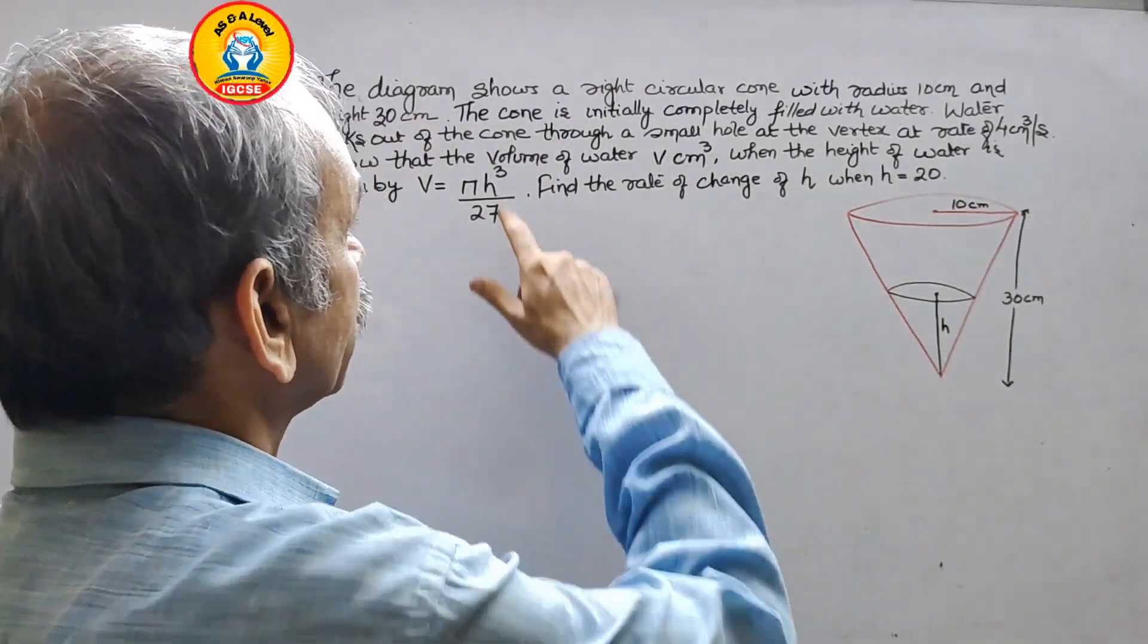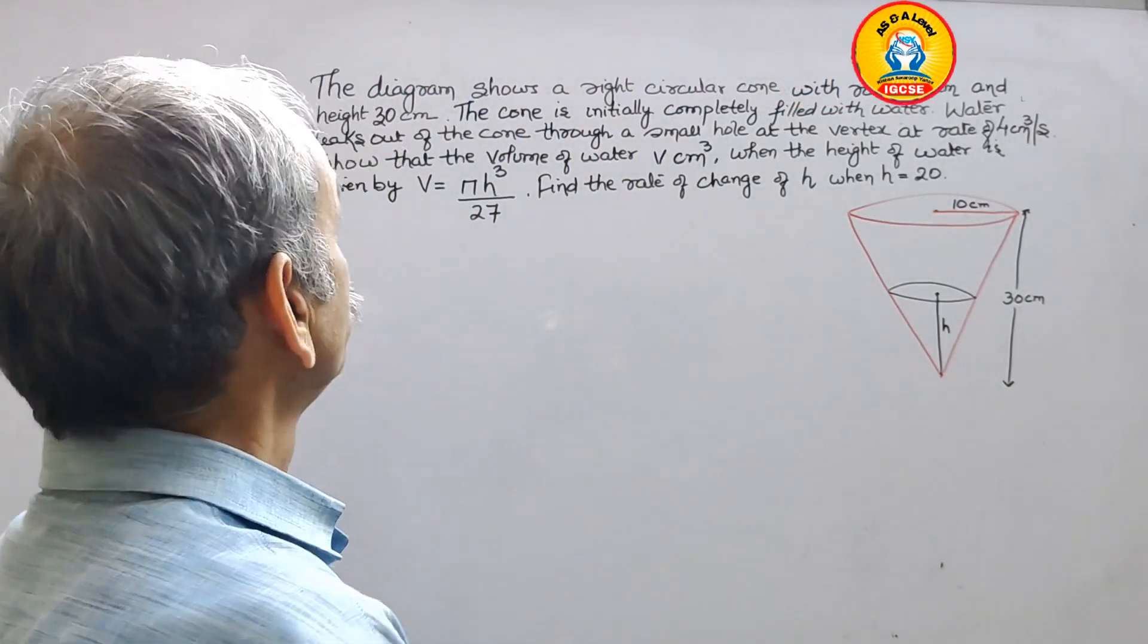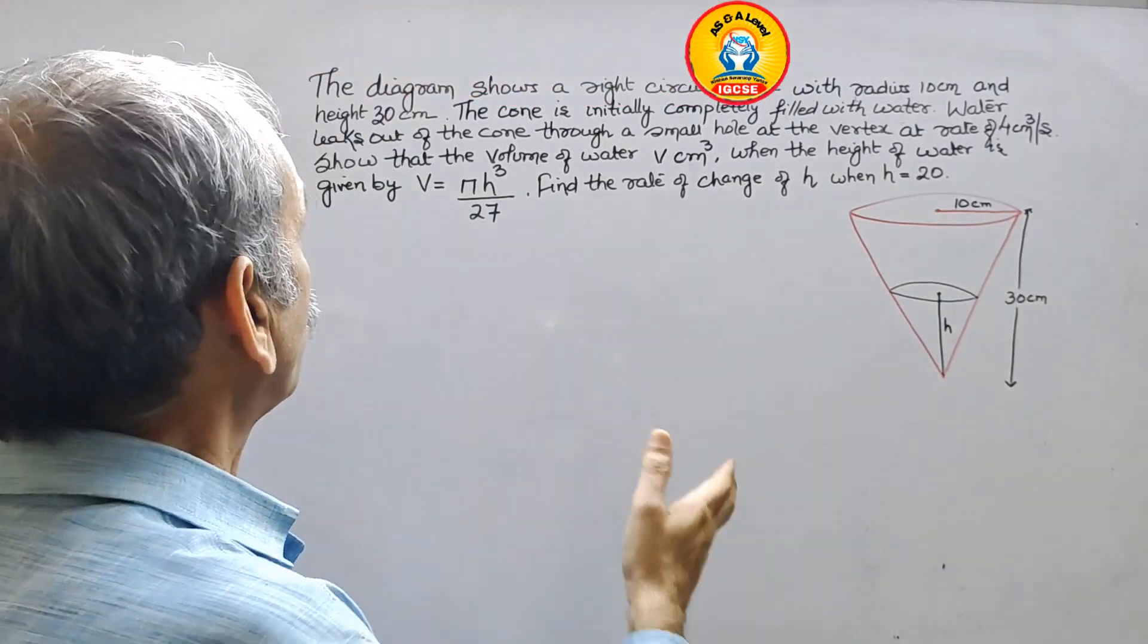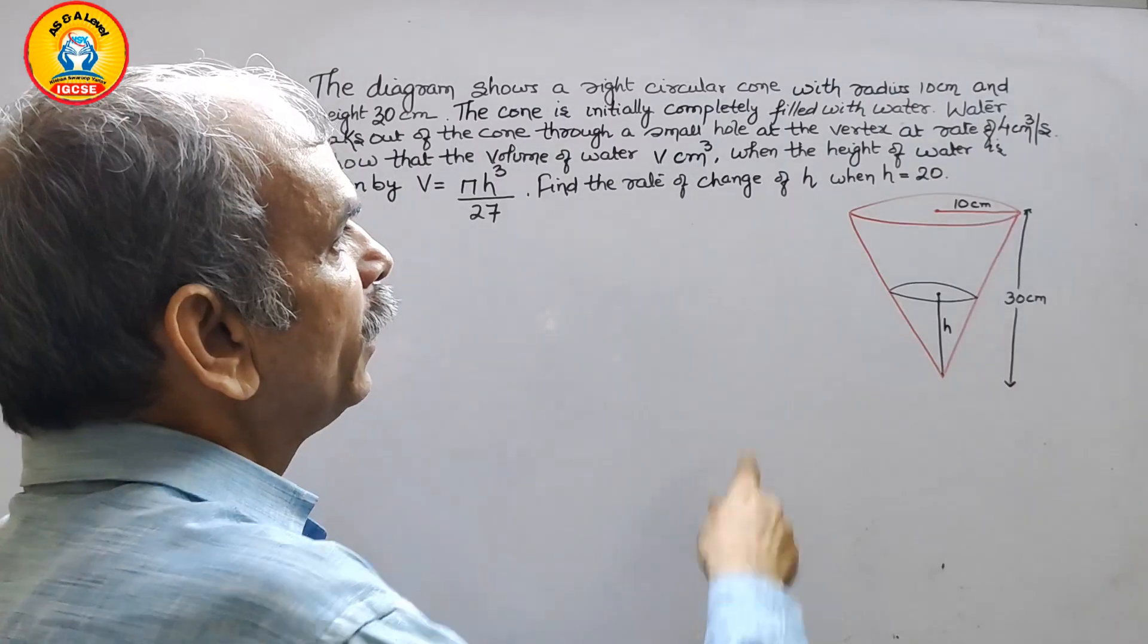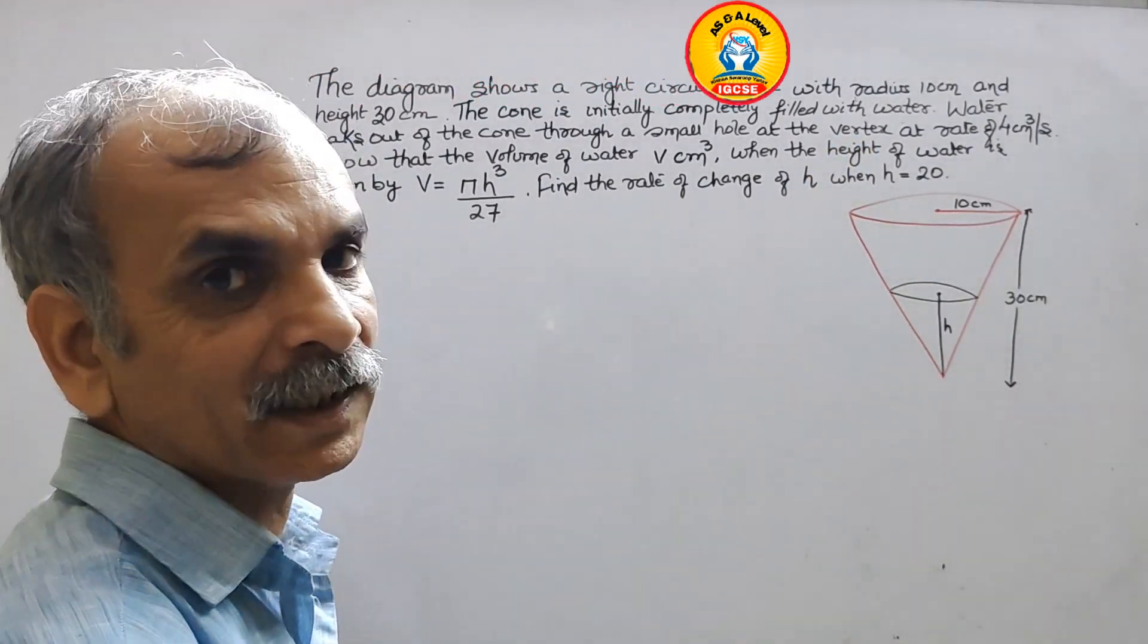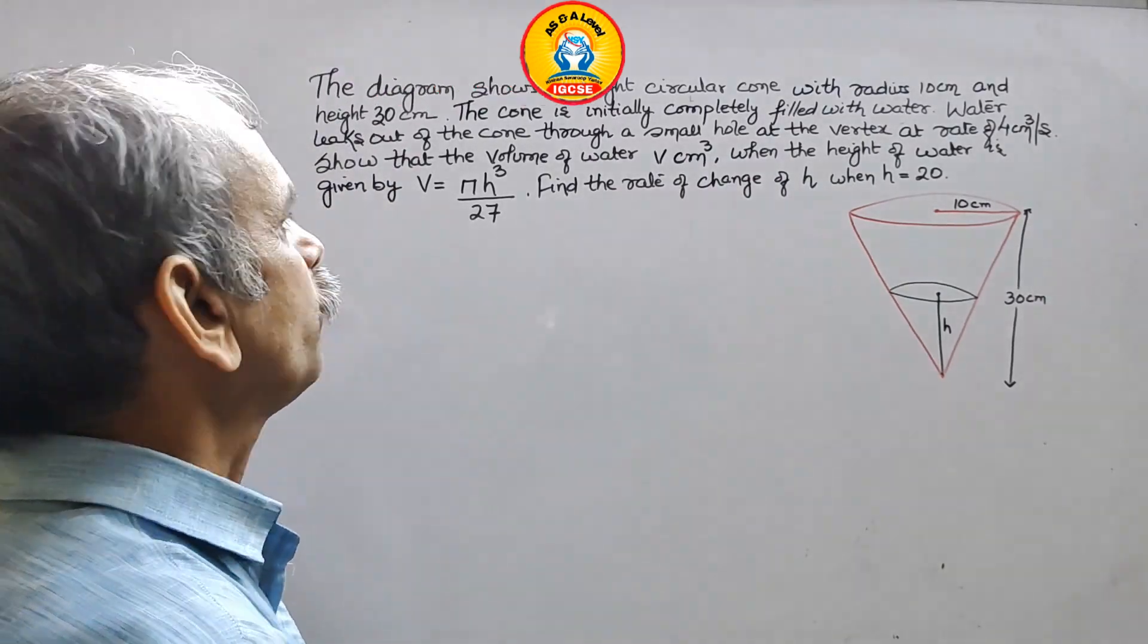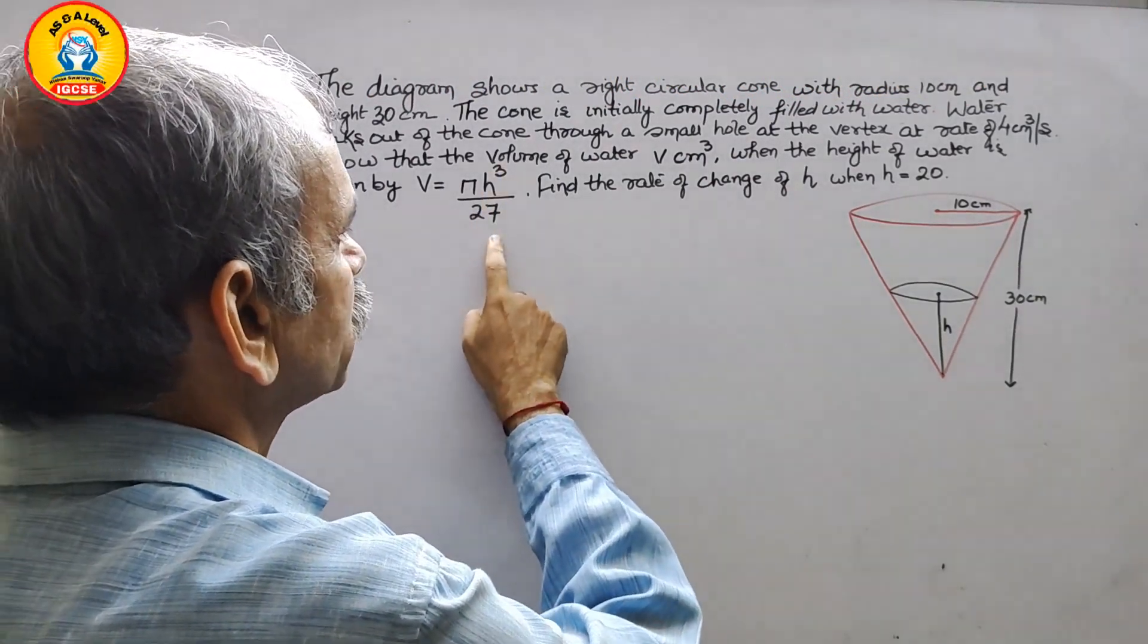Your question is: the diagram shows a right circular cone with radius 10 cm and height 30 cm. The cone is initially completely filled with water. Water leaks out of the cone through a small hole at the vertex at the rate of 4 cm³ per second. Show that the volume of water v cm³ when height of water is h is given by v = πh³/27. Find the rate of change of h when h = 20.